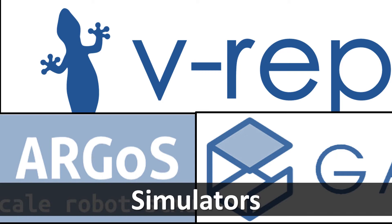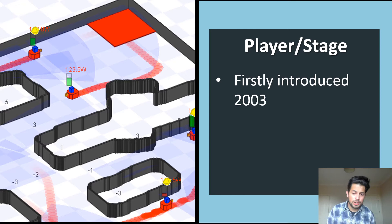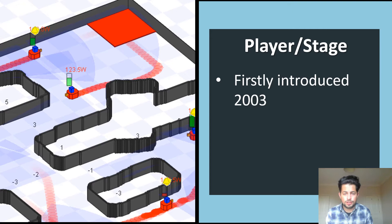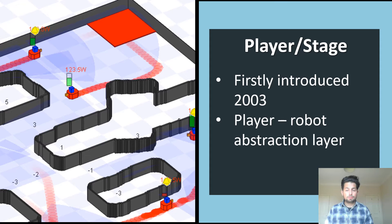We mentioned why simulators are important and what we're looking for. Let's mention a few available for swarm robotics. The first one is called Player and Stage. This was a very popular simulator back in the day, first introduced in 2003, with a player-robot abstraction where Stage is the simulator and Player is the robot model. Many people used it, but there were many disadvantages — including that the documentation was not very good.